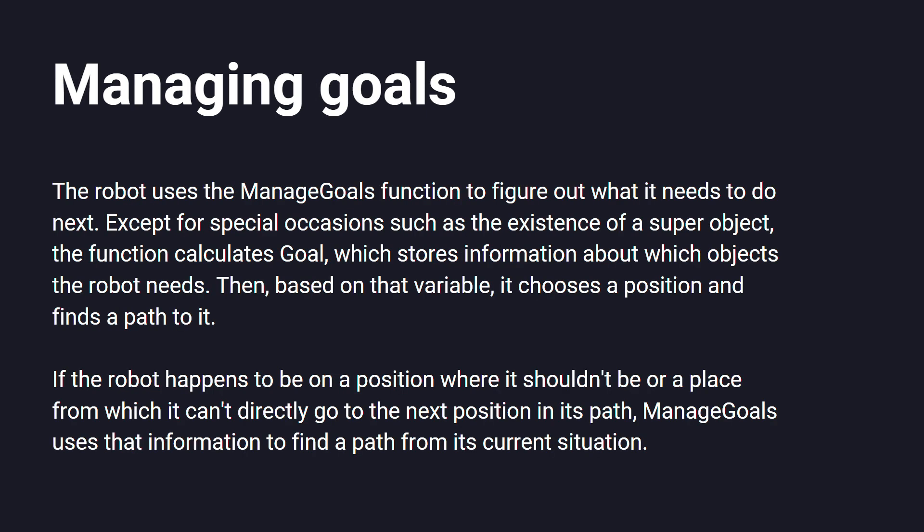For Key Positions to be useful, the robot needs to know where it needs to go. That's what the manage goals function does — it finds out what colors the robot needs to find and then finds a path to a position with those objects.